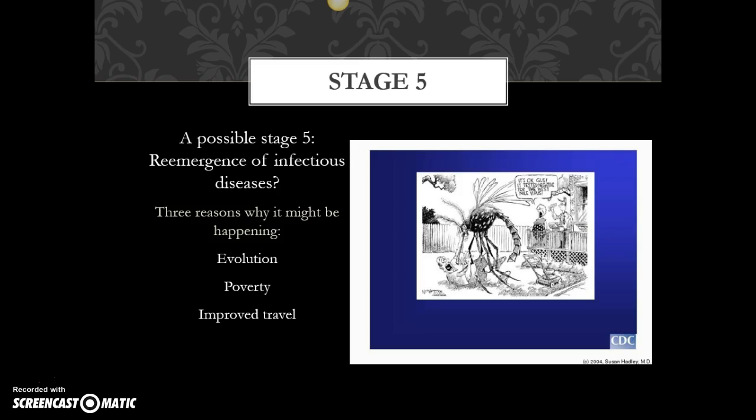Part of this debate also includes the debate over whether people should vaccinate their children. Vaccinating only works if most people get it, because those who can't get it — whether for religious objections or immune system problems — benefit from herd immunity. If everybody around them is immune and isn't going to get the disease, those people become significantly less likely to get it as well.